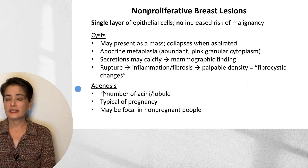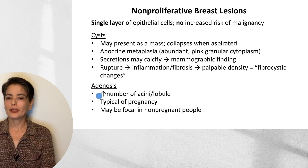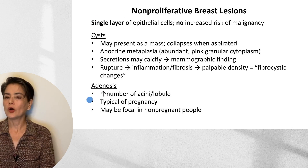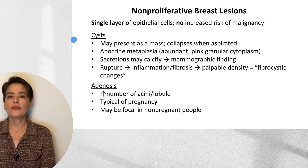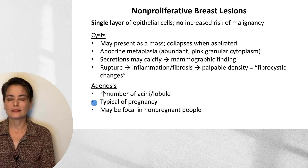The next entity is adenosis, which is an increased number of acini per lobule. Increased number of acini sounds like it involves proliferation, but the important thing to keep in mind is that both cysts and adenosis are associated with no increased risk of malignancy. Adenosis is typical of pregnancy and may be focal in non-pregnant people.